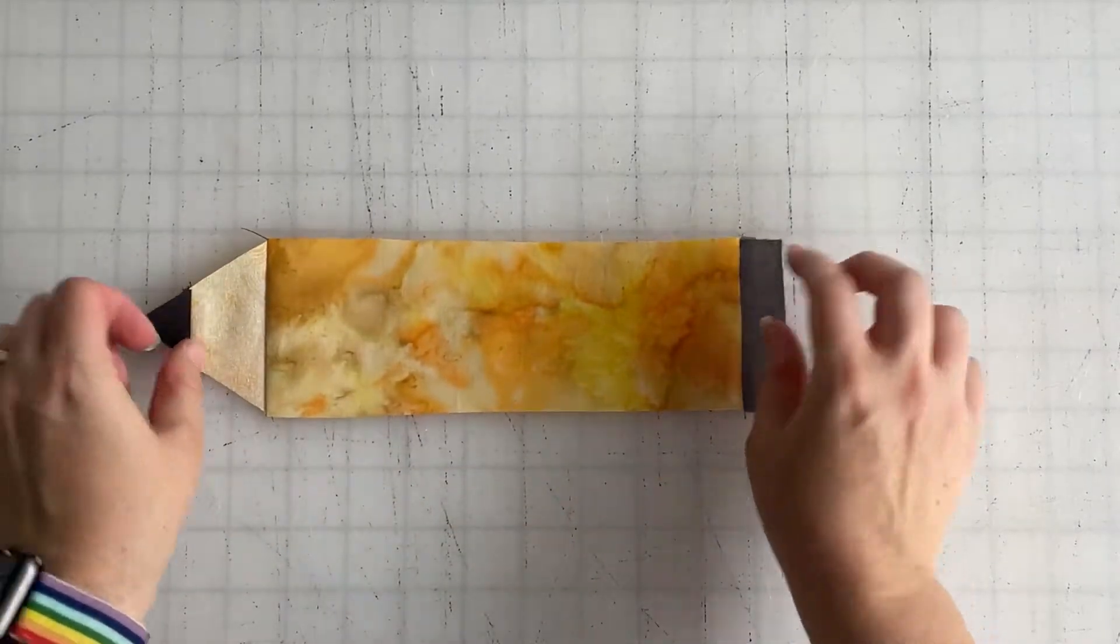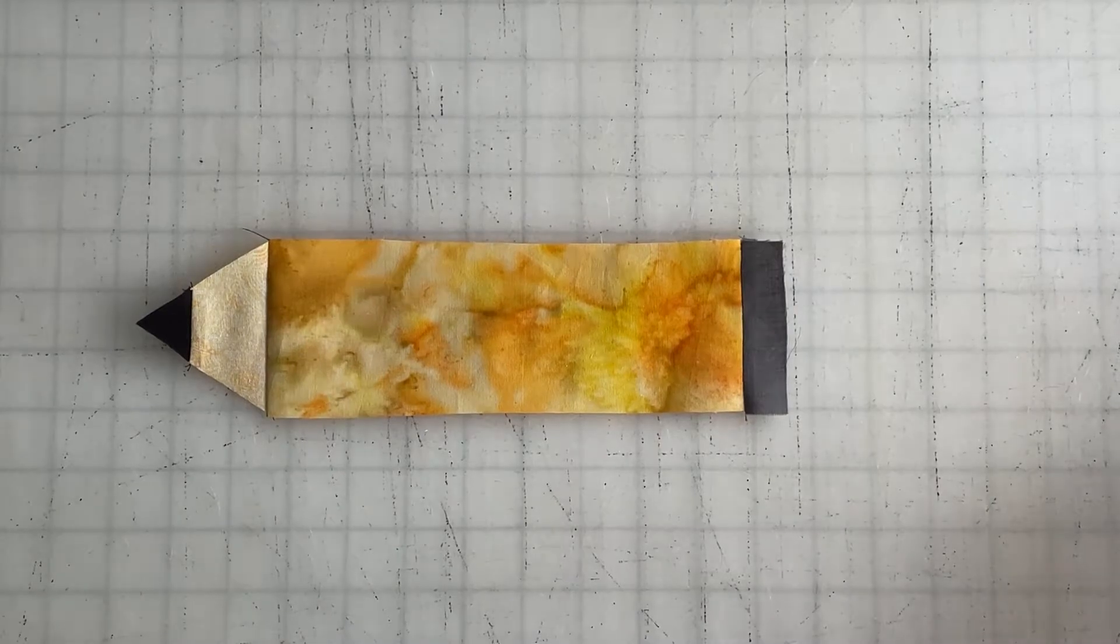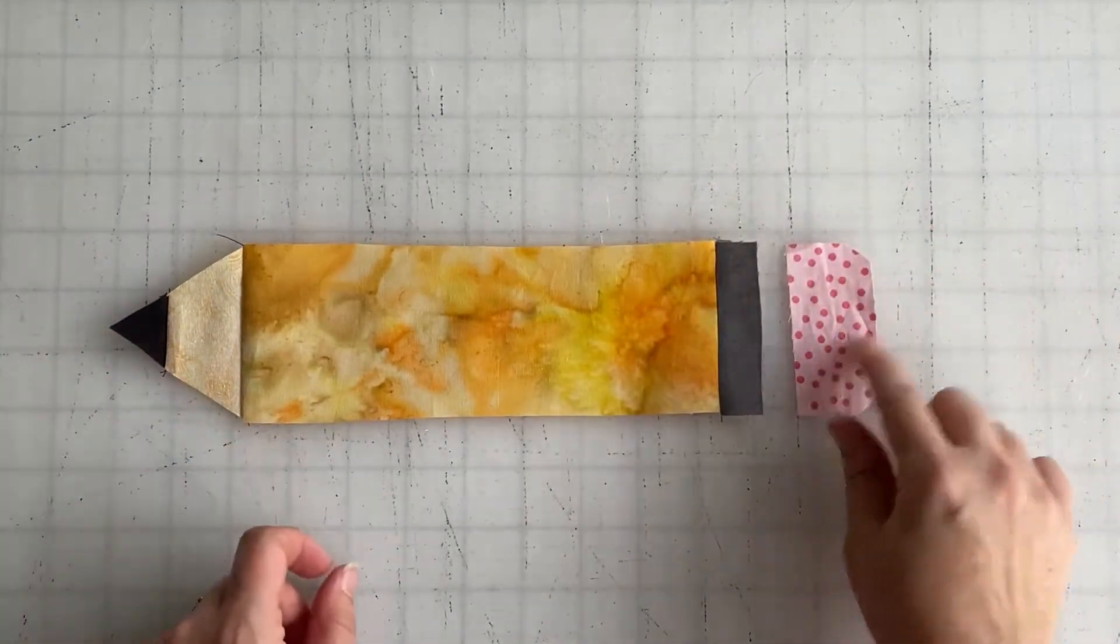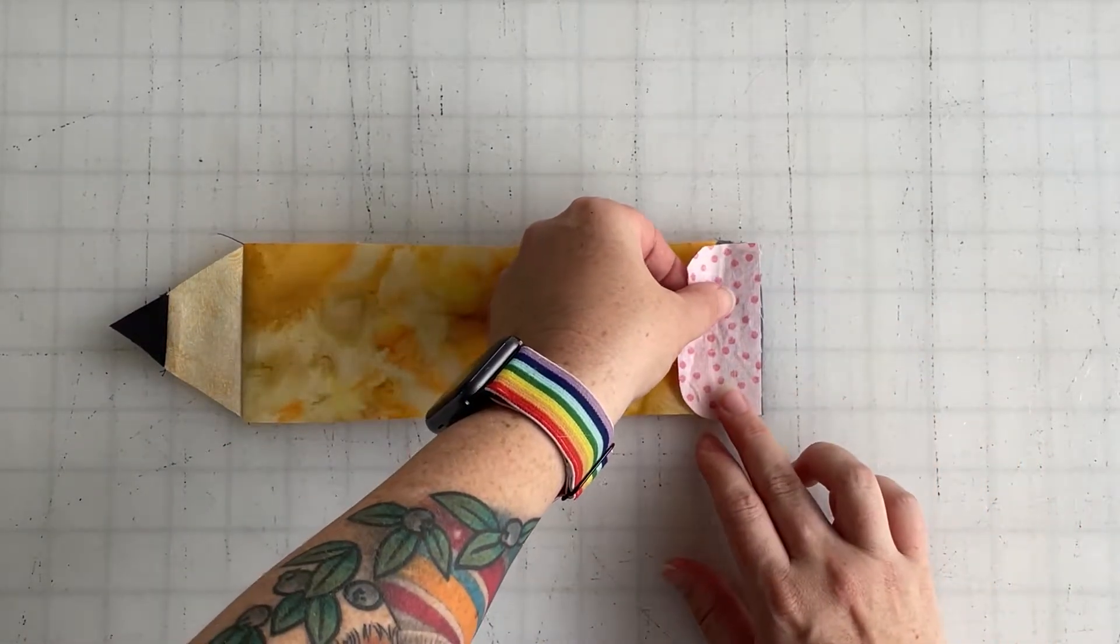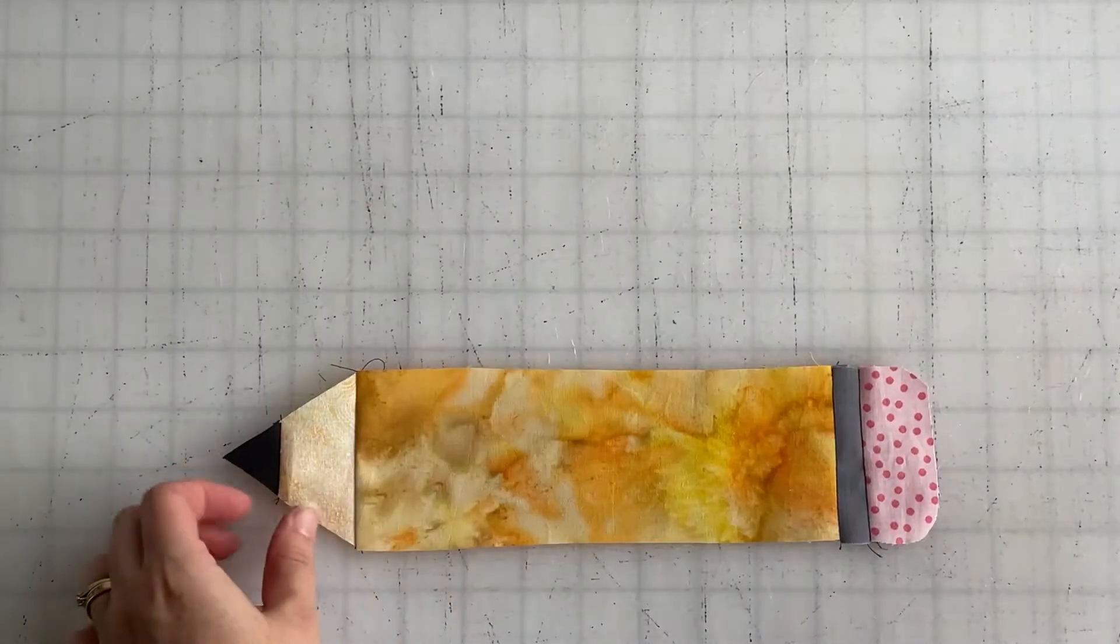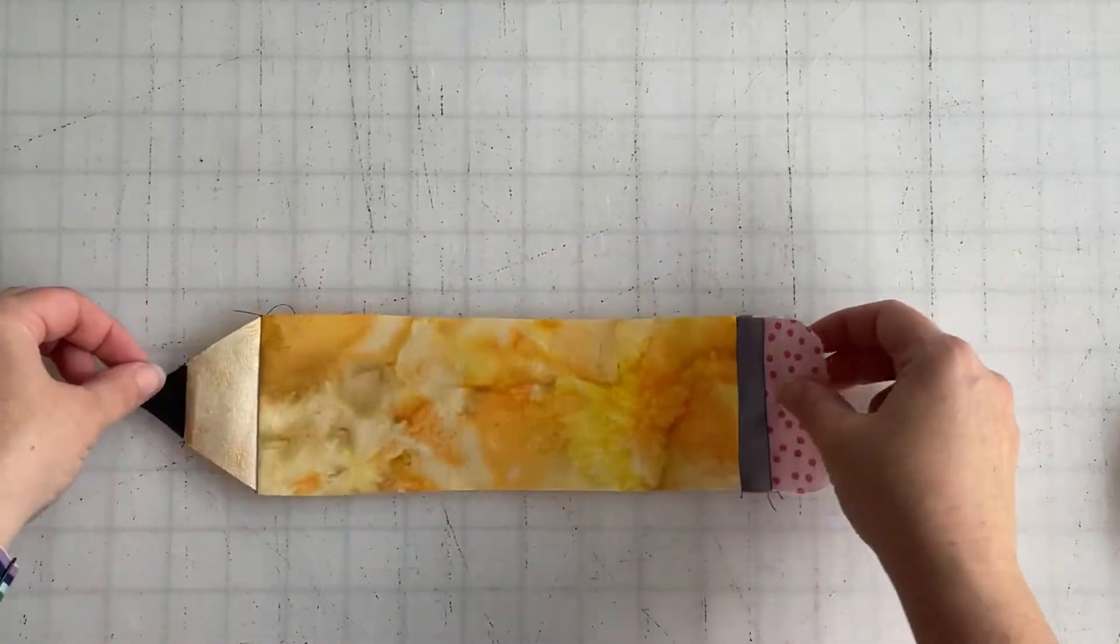Once you're pressed, we are going to do the same thing with piece number five. Put it right sides together and sew a quarter-inch seam allowance along that straight line.